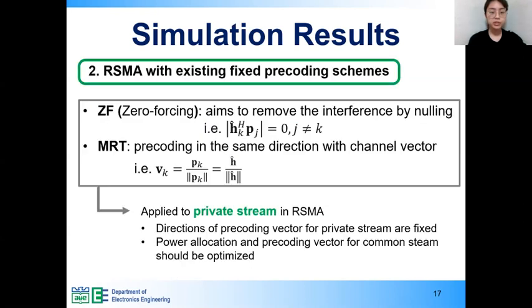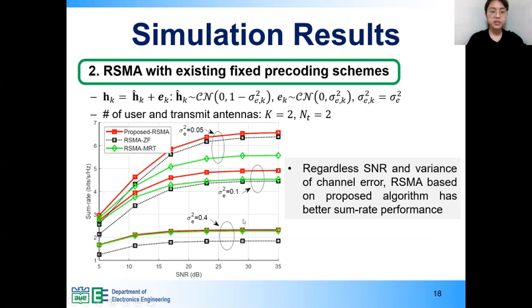We also compare simulation results of RSMA with the proposed precoding vector and existing fixed precoding vector, zero-forcing and MRT. Zero-forcing and MRT are applied to private part and power allocation and precoding vector of common stream are optimized based on modified algorithm. We simulate under various channel error variance conditions. Under perfect CSI, it is well known that MRT is near optimal in low SNR and zero-forcing is asymptotically optimal in high SNR. But there is no longer preference in an imperfect CSIR and CSIT scenario due to channel error. For example, when channel error variance is 0.4, MRT is near optimal even in high SNR. Therefore, as shown in figure, RSMA with optimized vector has better performance than RSMA with specific precoding vector, regardless of the size of the channel error variance and SNR.